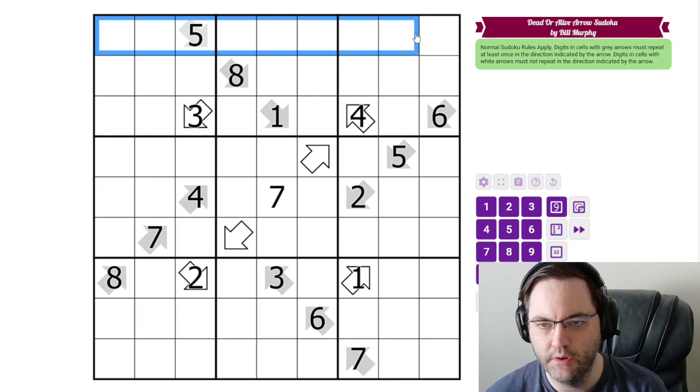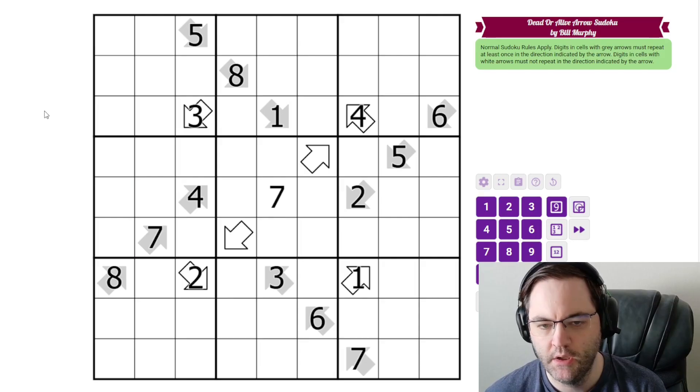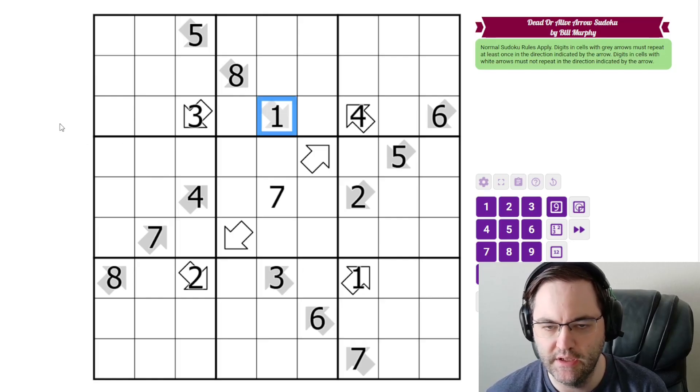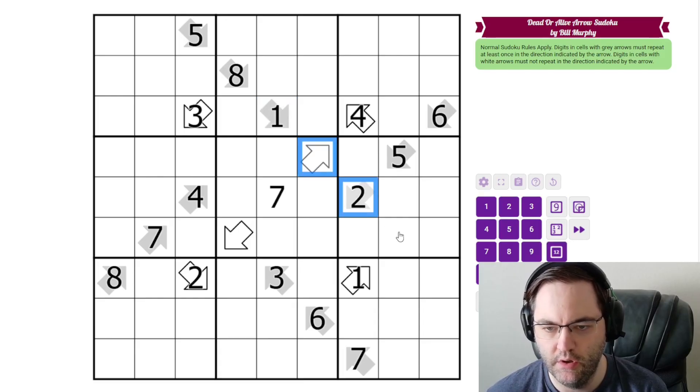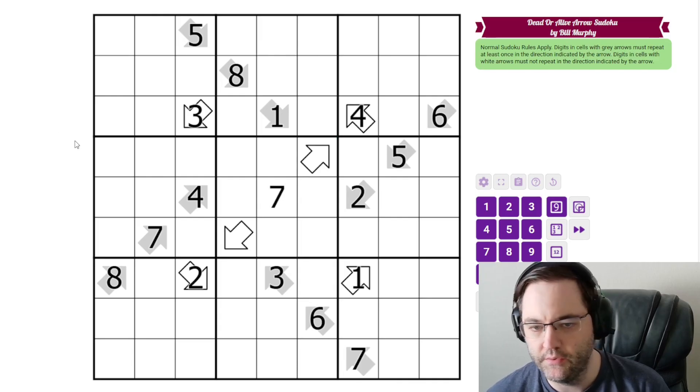We have normal Sudoku rules, 1 to 9 in each row, column, and 3 by 3 box. Additionally, we have some arrows in the grid, and there are two different types of arrows. The gray arrows indicate that the digit in the arrow must repeat along that direction. So somewhere in these cells is a 1. The white arrows indicate that the digit in the arrow does not repeat. So whatever is here, say this is a 9, cannot also be in these cells. So no 9 in these cells. And those are the rules.